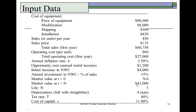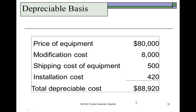The projected salvage value of this equipment at the end of three years — which is the expected market value when the investment is terminated — is $42,000. However, the equipment will be depreciated fully over four years, one year longer than the period of use. We use a tax rate of 40% and cost of capital of 11%. The depreciable basis comprises four items: price, modification, shipping, and installation, which sum to $88,920.